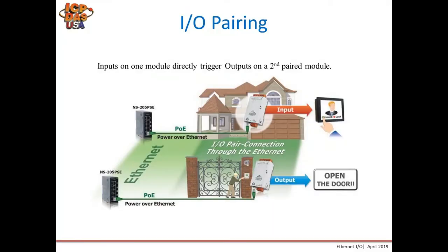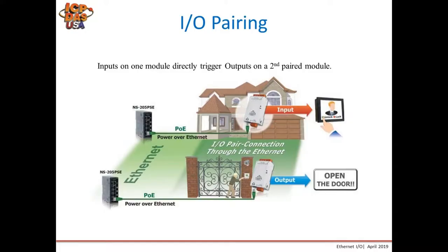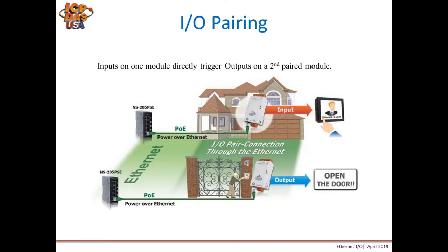This slide shows our IO pairing feature, which is exclusive to the ET-7200 and ET-7000 series. In pairing mode, an input module on one end and an output module on the other end are paired so that when an input on one module turns on, the corresponding output on the other module turns on. A practical example is a house and gate scenario: when someone pushes a button at the gate, it signals an input within the house, allowing someone to remotely unlock the gate over Ethernet without being at the terminal.